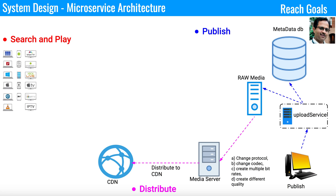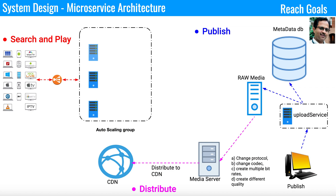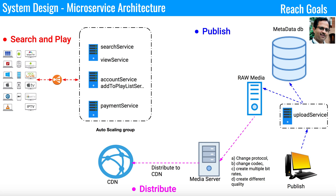Once audio or video is distributed to the CDN, the next step is search and play. Clients — iPhone, Android, embedded devices, or smart TVs — connect to load balancers. The load balancer connects to an auto-scaling group containing Docker containers running in pods within nodes, which can scale up or down. Different services deployed in these containers include: search service, view service, account service, add-to-playlist service, and payment service, all managed within a Kubernetes cluster.